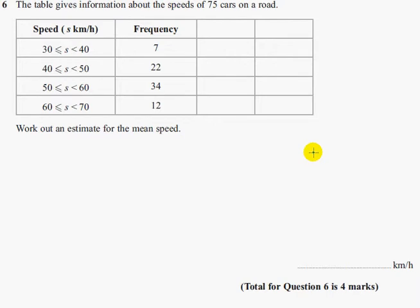So what we're going to do is we're going to put a midpoint. We're going to assume all of these cars are going 35 kilometres per hour, because we don't know. So we're pretending or we're assuming all the cars are travelling 35 kilometres per hour, the midpoint here,